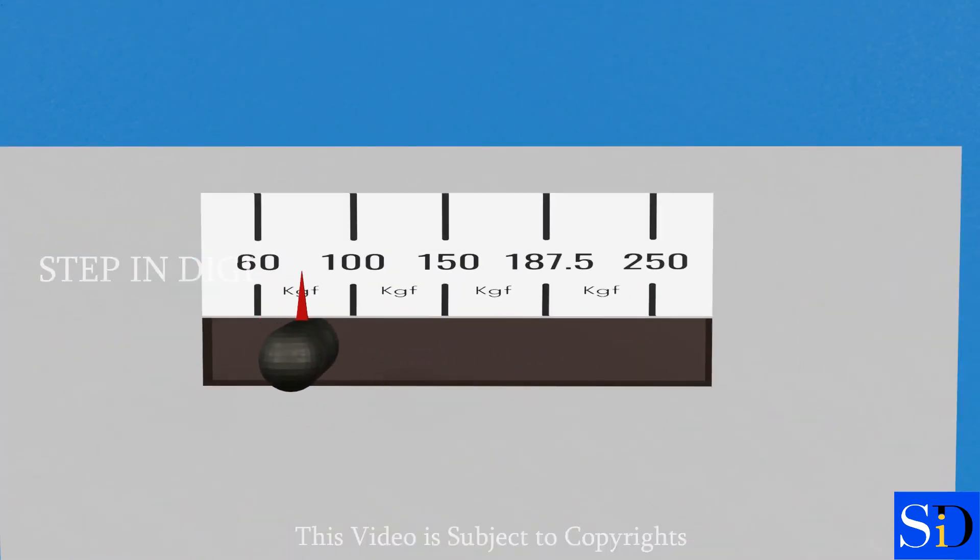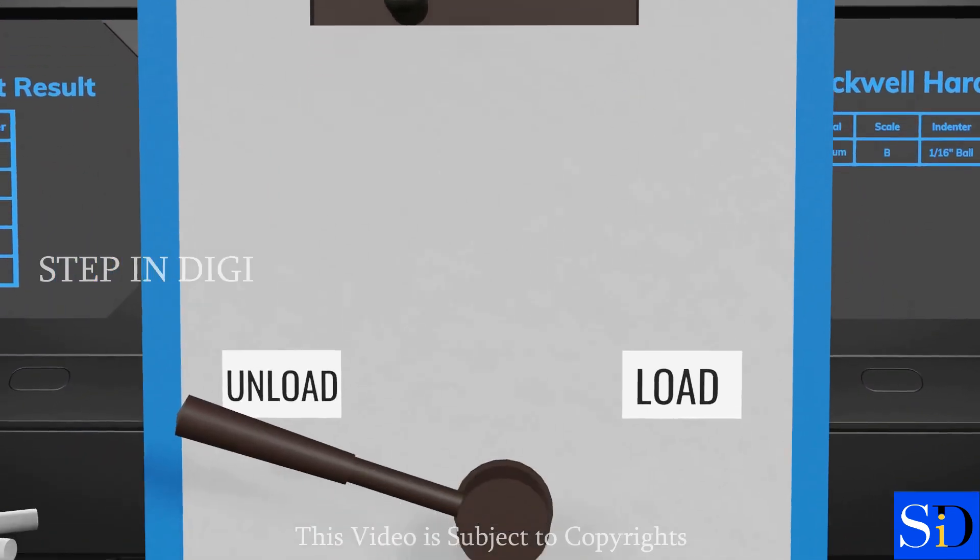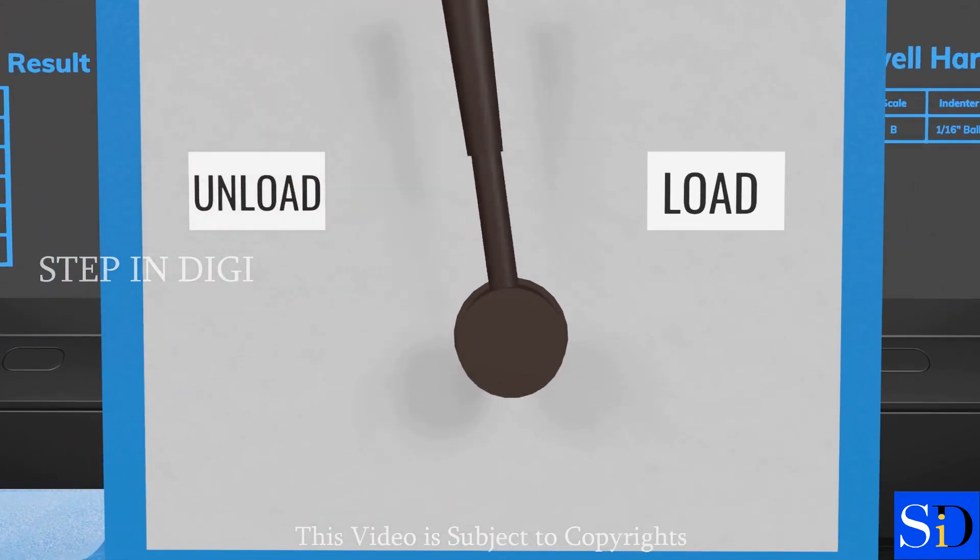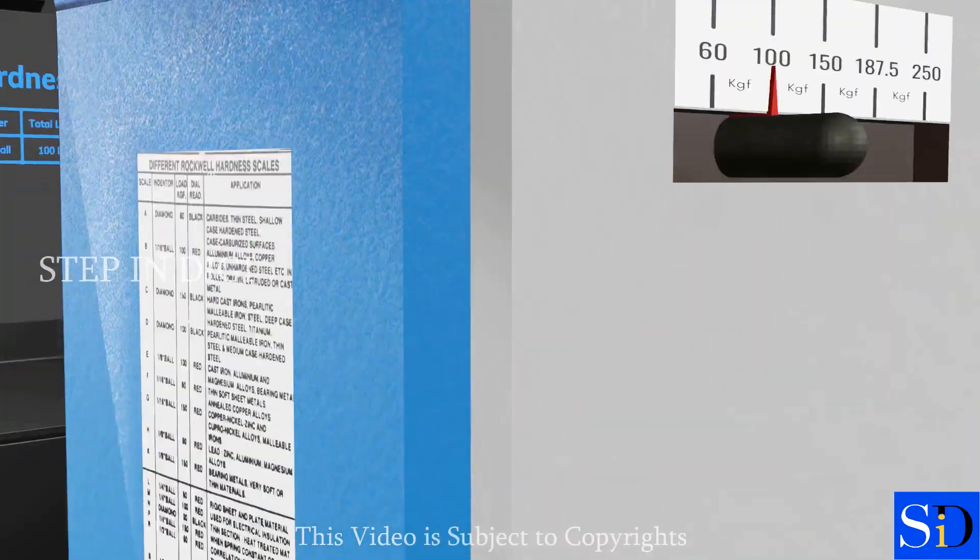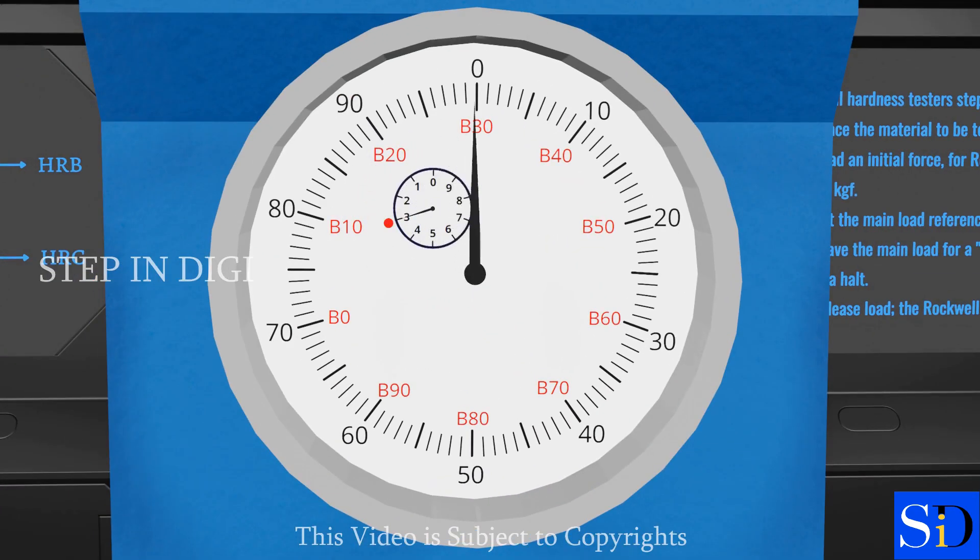Now, initialize the load of 100 kgf using the switch given. Push the lever towards the load side gently, and leave the main load for a dwell time sufficient for indentation to come to a halt.